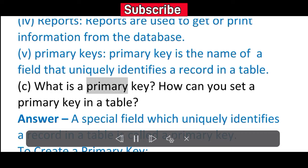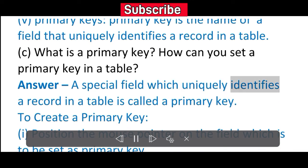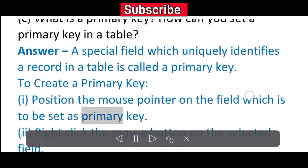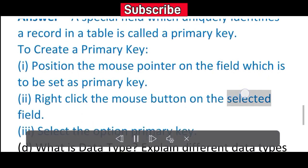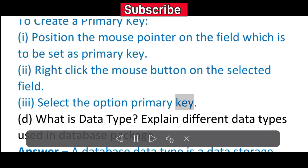C. What is a primary key? How can you set a primary key in a table? Answer: A special field which uniquely identifies a record in a table is called a primary key. To create a primary key: (i) Position the mouse pointer on the field which is to be set as primary key. (ii) Right click the mouse button on the selected field. (iii) Select the option primary key.